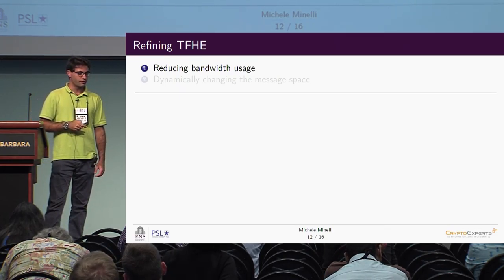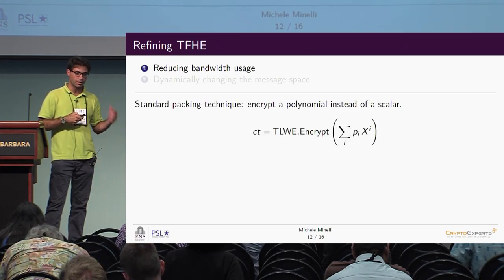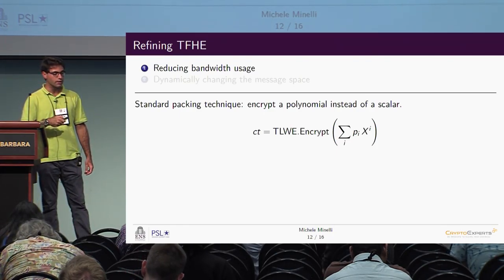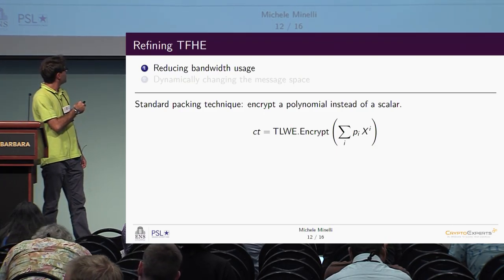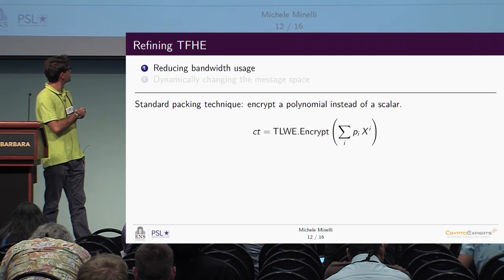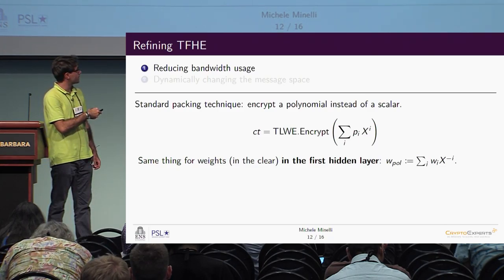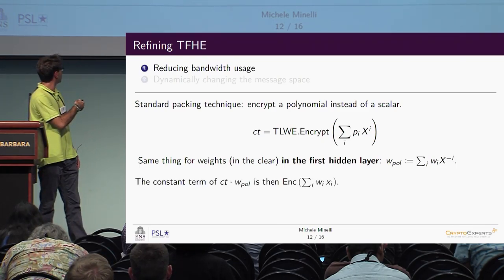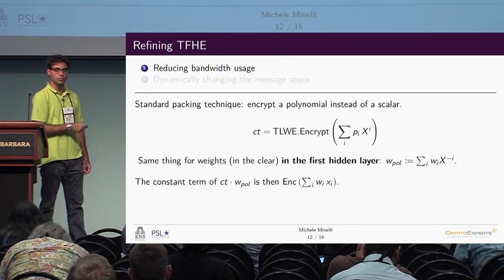We introduce some refinements. First, we reduce bandwidth usage with the standard packing technique of encrypting a polynomial instead of many scalars — so instead of encrypting pixels one by one, we encrypt the polynomial containing an entire image. We start with a TLWE encryption of this polynomial where pi's are the pixels and obtain ciphertext ct. Then we prepare polynomial w-pol containing weights wi times x to the minus i, and multiplying ct by w-pol gives us the constant term as exactly the encryption of the multisum.